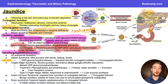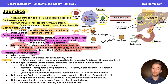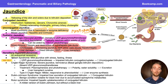Getting into our hereditary hyperbilirubinemias — these are an interesting set of conditions. Some of them are extremely mild, while others are potentially life-threatening. All of these conditions are going to be autosomal recessive, so if you're asked to compare genetics of these on a test, definitely keep that in mind.